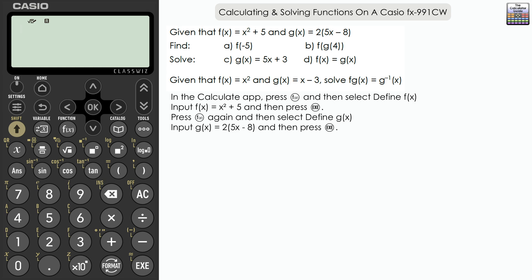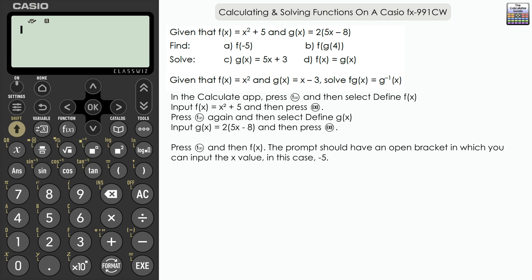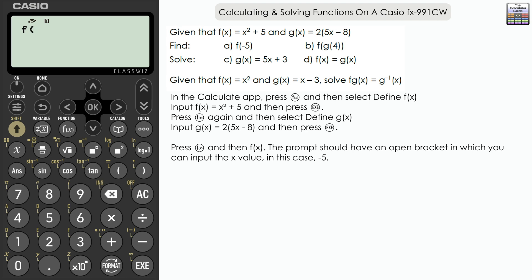The first two questions involve finding values. For Part A, we need f of negative 5 — what does f(x) give us when x equals negative 5? Press Function and select f(x). It opens an f bracket so you can input a value. Input negative 5, close the bracket, and press Execute. The result is 30 — that's negative 5 squared, which is 25, plus 5.